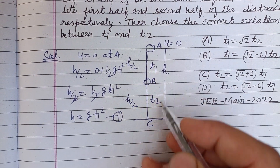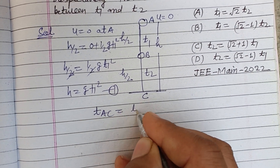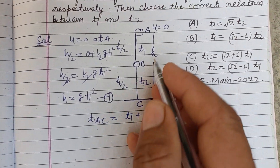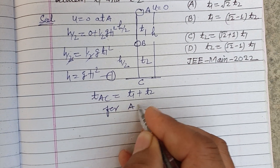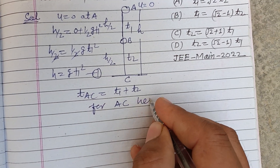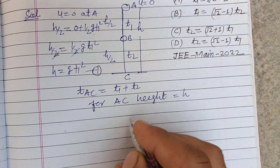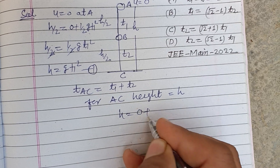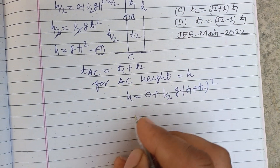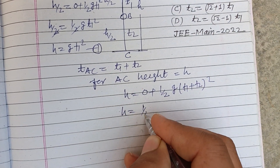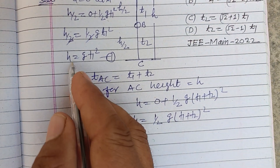Now, the total time from A to C is t1 + t2. For the full height h from A to C, with u = 0: h = ½g·(t1 + t2)². This is our second equation.